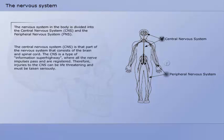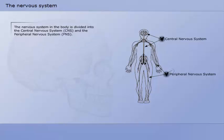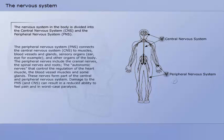The central nervous system is that part of the nervous system that consists of the brain and spinal cord. The central nervous system is a type of information superhighway where all the nerve impulses pass and are registered. Therefore injuries to the central nervous system can be life-threatening and must be taken seriously.